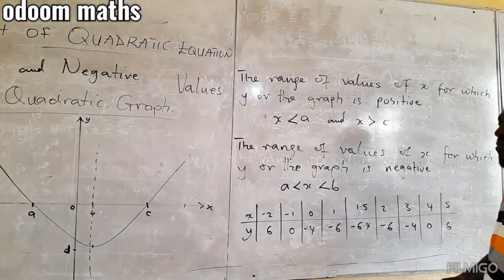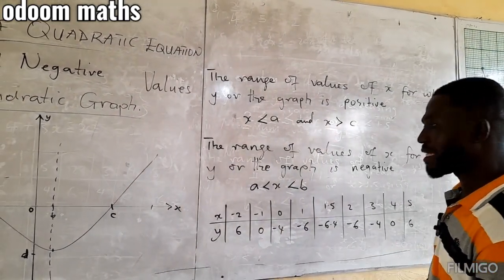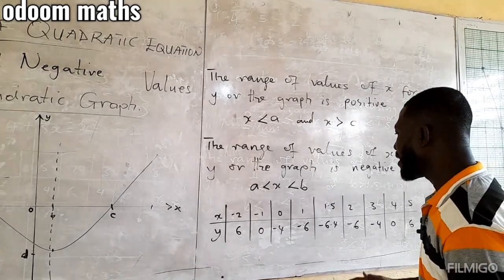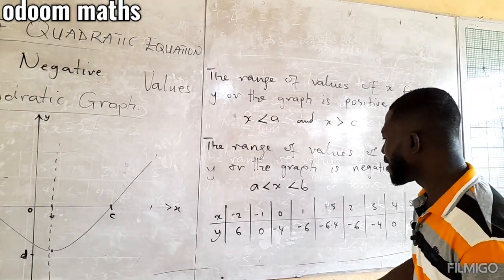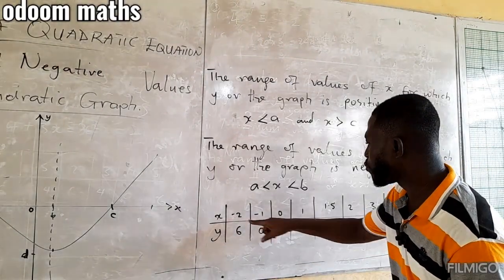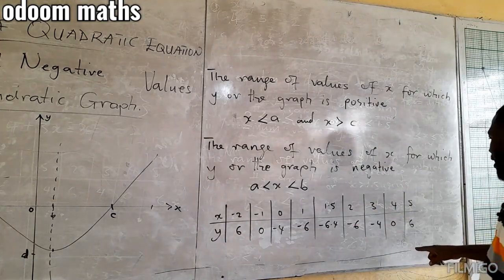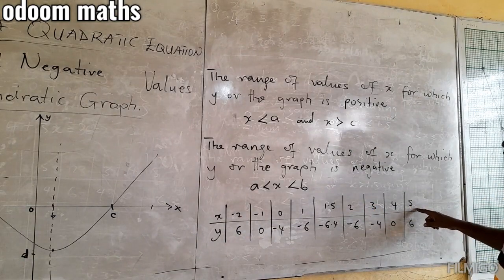So, let's look at this table. Now, per this table that we have, let's look at those x values that make y negative. We see that, let's start from the positive. From negative 2 to negative 1, or only negative 2, and then 5. These values of x make y to be positive.